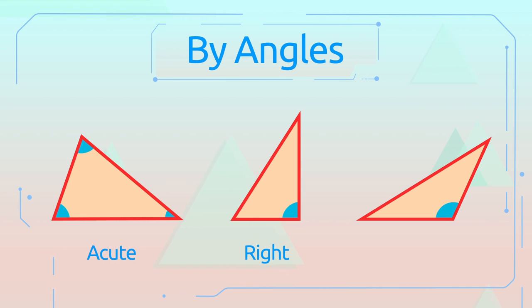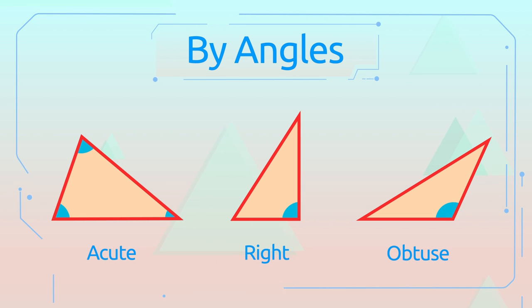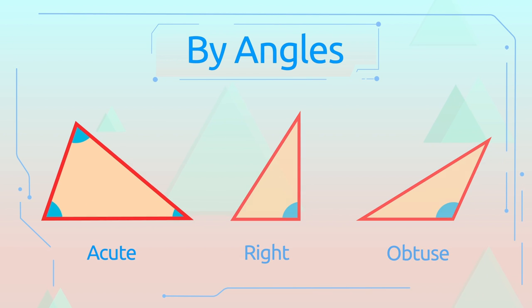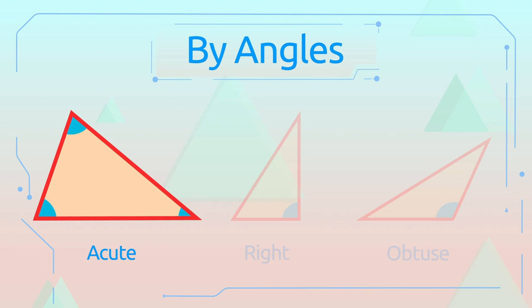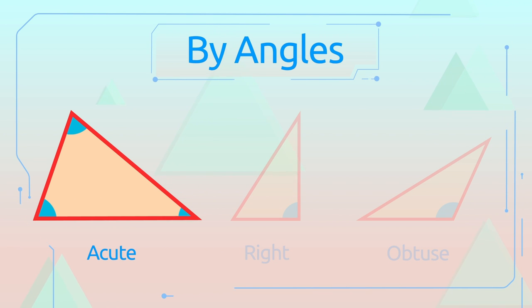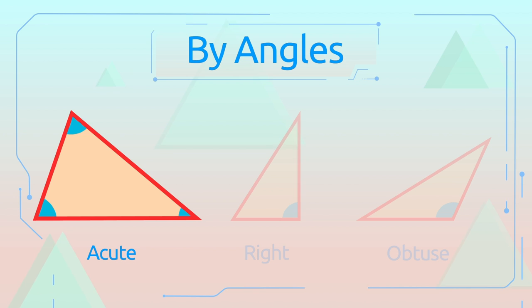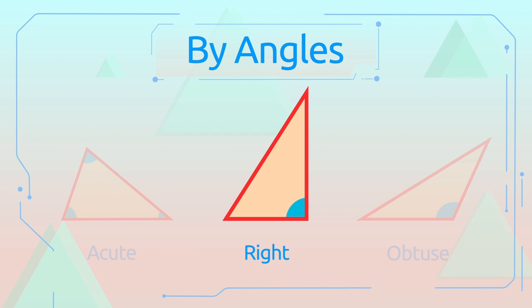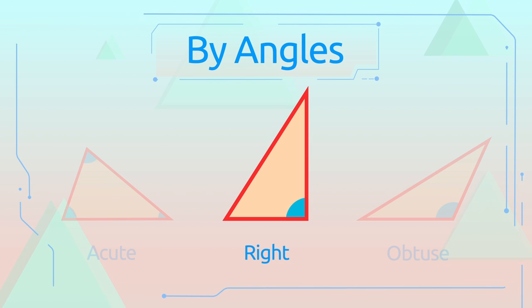A triangle with three acute angles is called an acute triangle. A triangle with one right angle is called a right triangle.